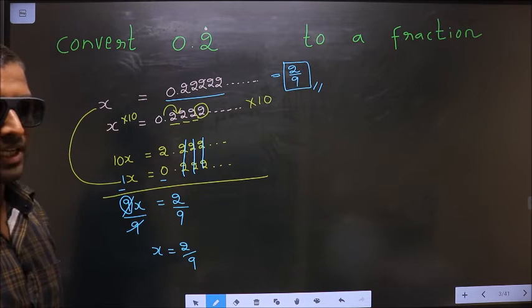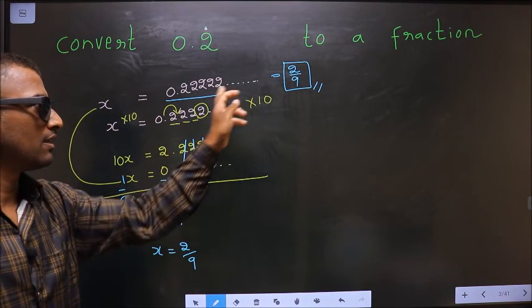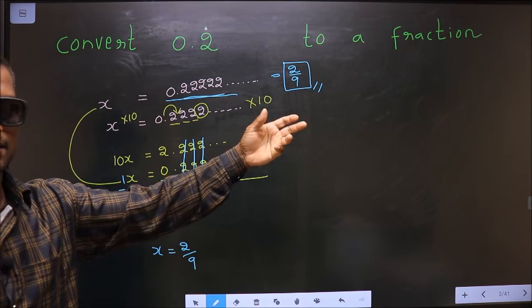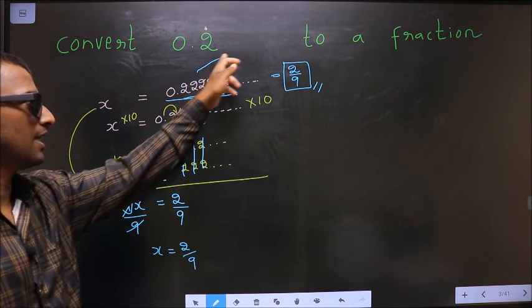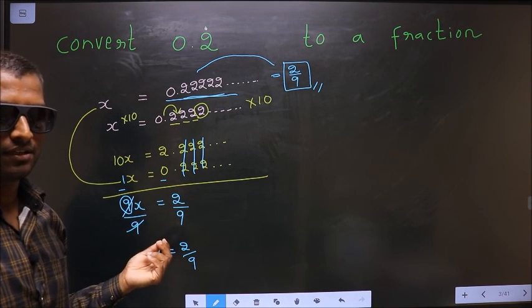Okay. Now, if you wish to confirm your answer, place this in the calculator. You should get this thing. If you get this, only then your fraction is correct. Okay. So, now, this is how we convert recurring decimal into a fraction. Am I clear?